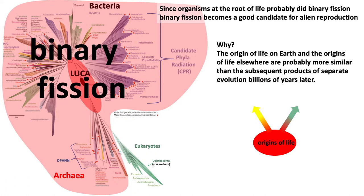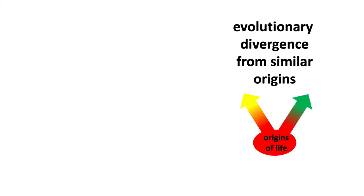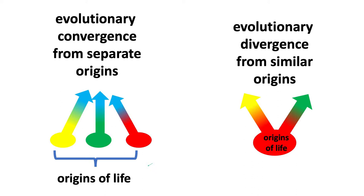Here's a diagram of that idea. Imagine that the origins of life are similar — shown in red — and then on one planet, life evolves from red into yellow life, and on another planet, from the common origin into green life. Two separate planets, with evolution making life diverge. For eukaryotes, the way we reproduce may be too derived or quirky to be a good candidate for ET reproduction. Alternatively, maybe life has separate origins — yellow, green, and red — and evolutionary pressure then produces similar blue life everywhere in the universe. The divergent model on the right is probably correct, but we shouldn't exclude the convergent one.